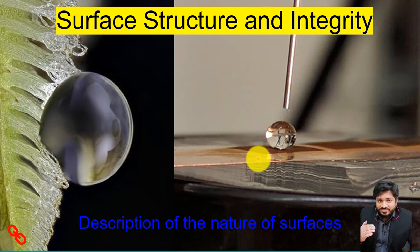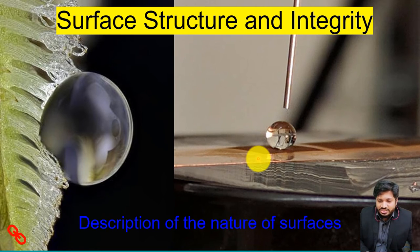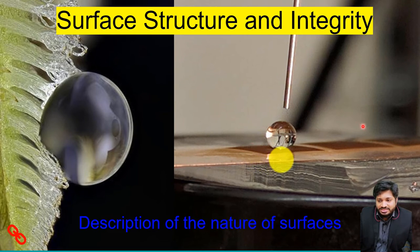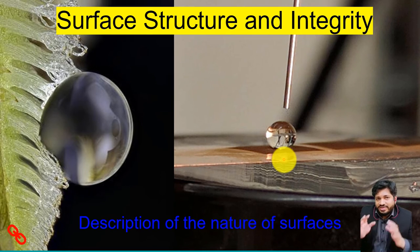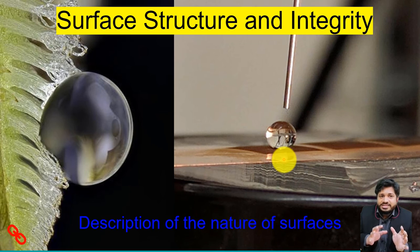These kinds of surface structures can be developed with the help of lasers and different manufacturing techniques. As you can see, a dropper has dropped a water droplet and this droplet cannot wet the surface. This is the description of the nature of surfaces — how we can learn from nature and integrate those natural surfaces into our engineered surfaces to obtain different functions for different applications.